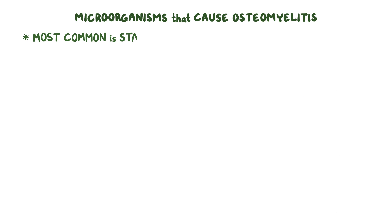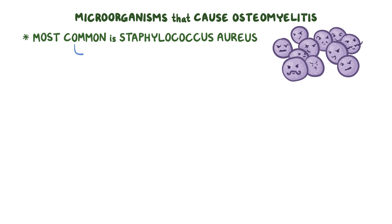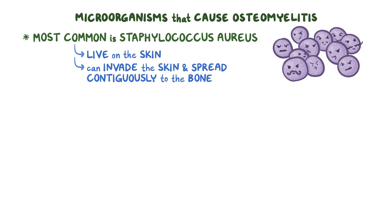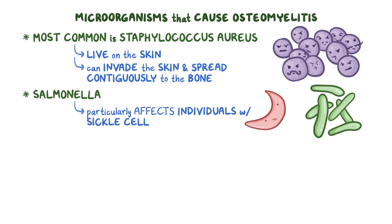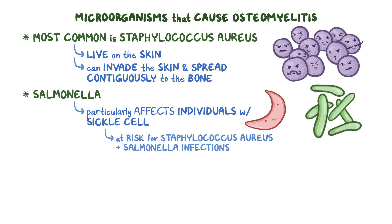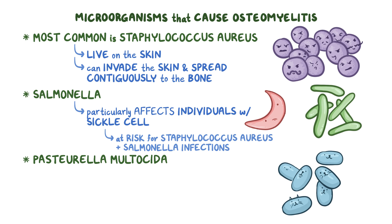Many microorganisms cause osteomyelitis, but the most common is Staphylococcus aureus, a grape-looking bacteria that lives on the skin. It can invade the skin and spread contiguously to the bone, or it can reach the bone through the bloodstream. Another one is Salmonella, a rod-shaped bacteria that particularly affects individuals with sickle cell disease — making them at risk for both Staphylococcus aureus and Salmonella infections. Another pathogen is Pasteurella multocida, a pill-shaped bacteria that usually spreads from the skin to the bone from a bite or scratch from a cat or dog.